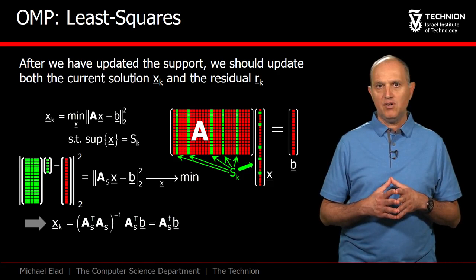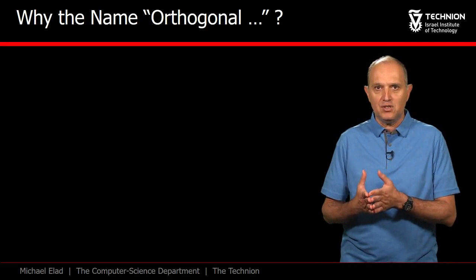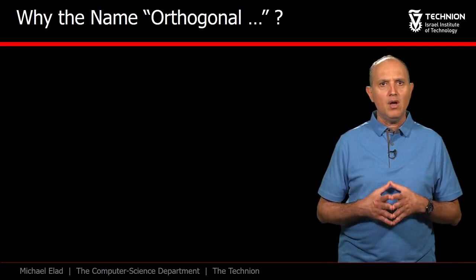Thus, this amounts to a simple least squares with k unknowns, and the solution is given by the pseudo-inverse of As times b. Why is this algorithm called orthogonal matching pursuit? The term matching refers to the correlations we apply between the residual and the atoms in A in order to find the next atom.